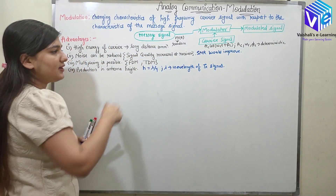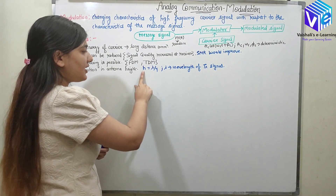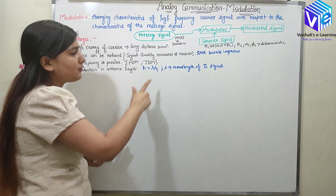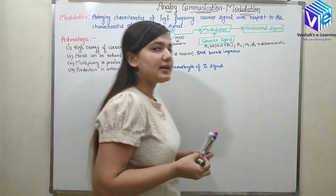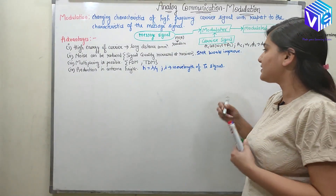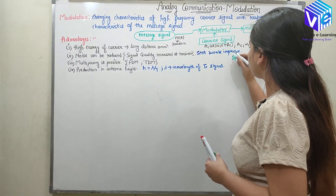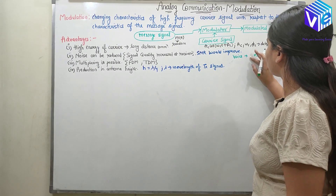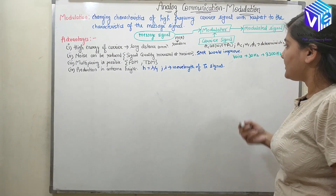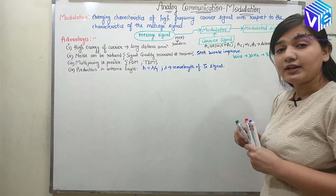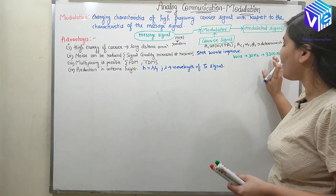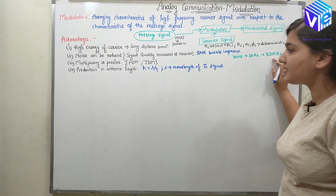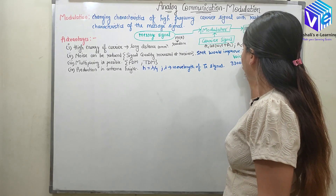When I have λ, the wavelength of the transmitted signal, then h — the height of the antenna required to capture this signal — is equal to λ/4. Let's take an example of the speech signal. Voice signal is in the range 30 Hz to 3300 Hz. Let's take the example of the highest range — let's suppose I am sending the highest frequency, which is 3300 Hz.